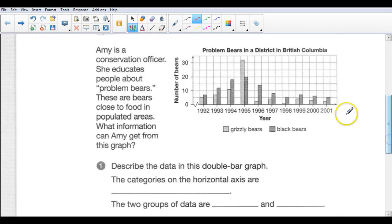All right, so we have a bar graph right here. This looks like a double bar graph. Let's look at the title. It says Problem Bears in a District in British Columbia. On the bottom horizontal axis, we've got the years from 1992 up to 2001. On the vertical axis, we have the number of bears. And then you can see it being a double bar graph showing this color right here, the light-shaded color as being number of grizzly bears being a problem, and the dark one being black bears.